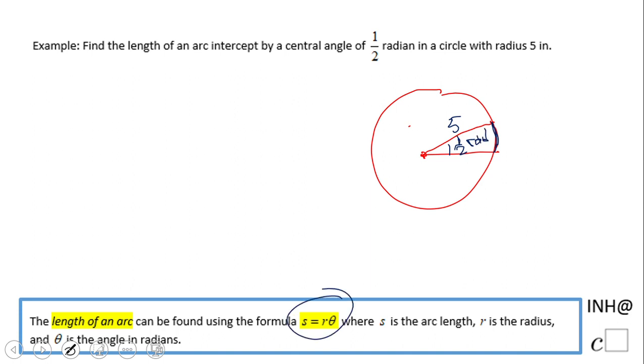If you notice here on the bottom, we have a formula which says s equals r times theta. Very important to understand what this is: s is the arc length we're going to find, r is the radius, and theta is the angle. Very important to understand that theta has to be in radians. If it's not in radians, you need to change it to radians if you want to use this formula.